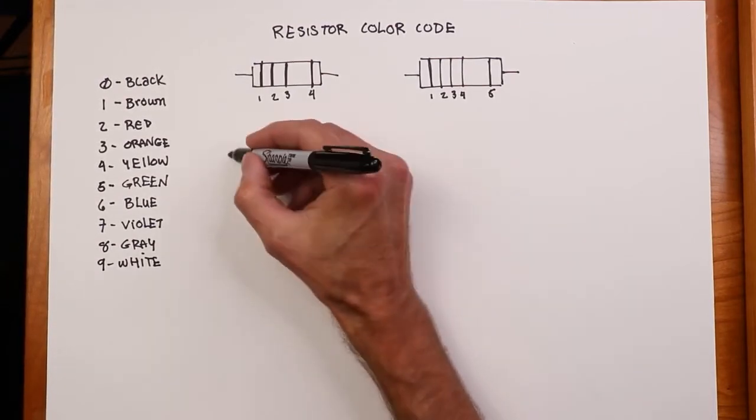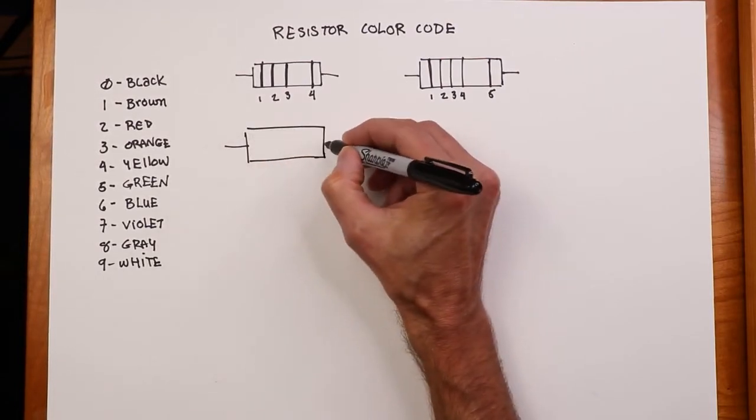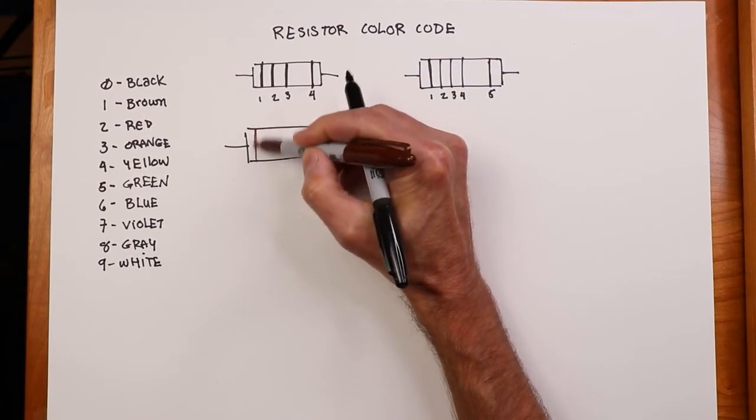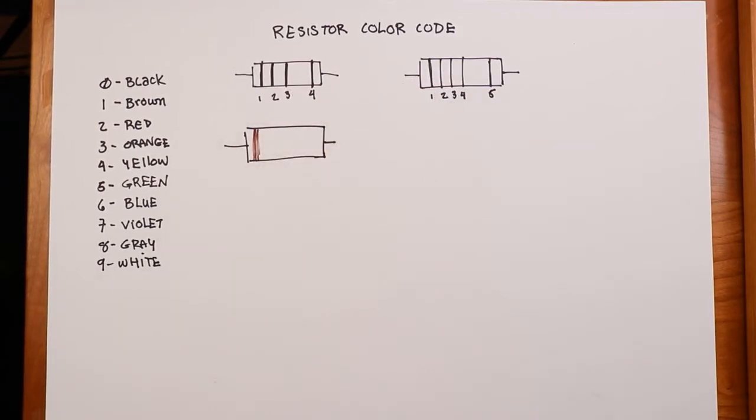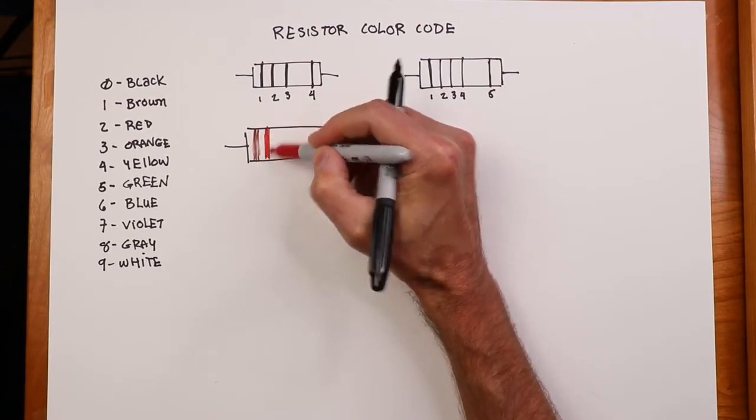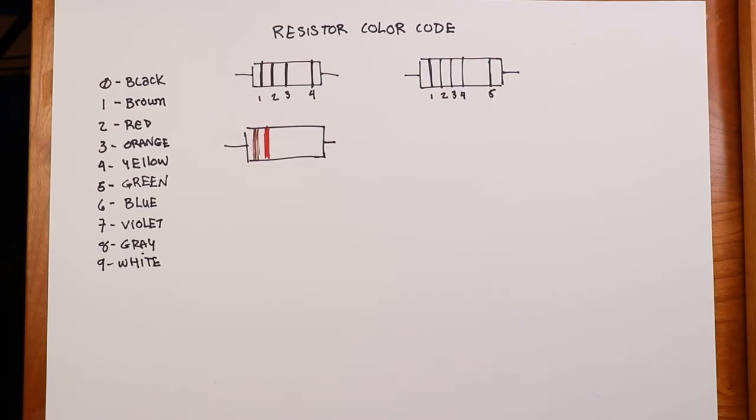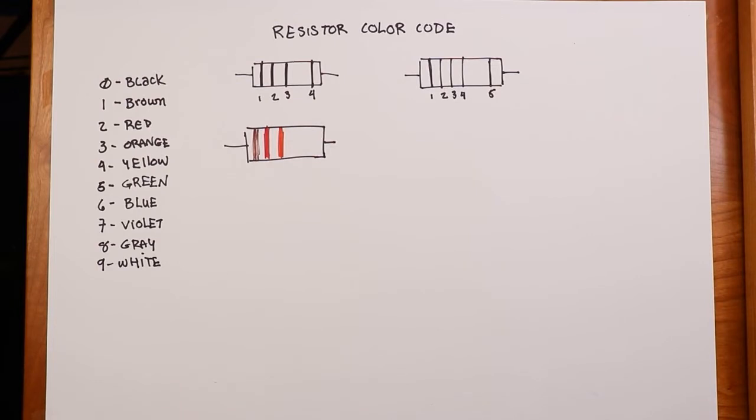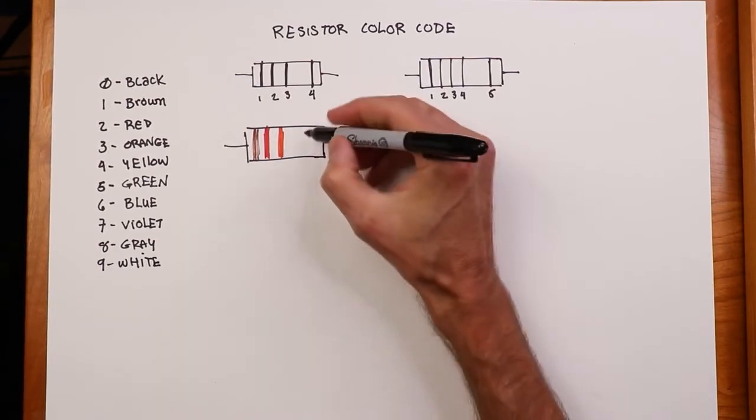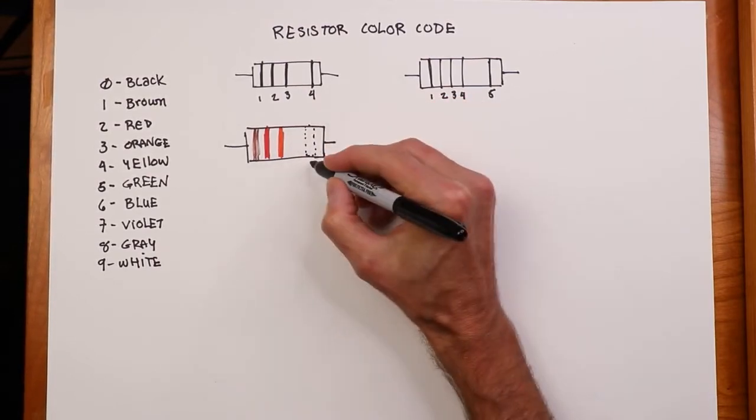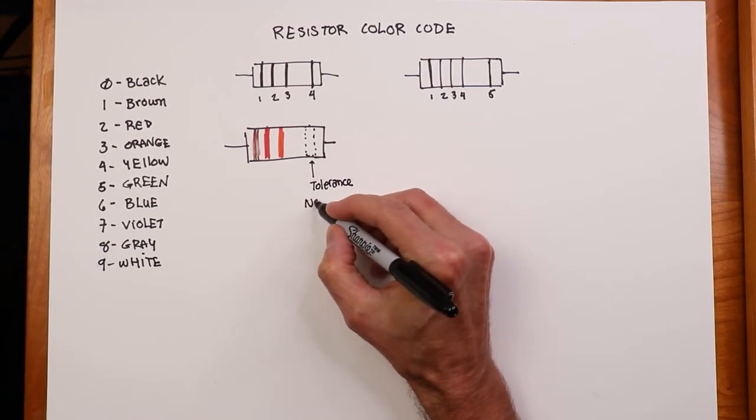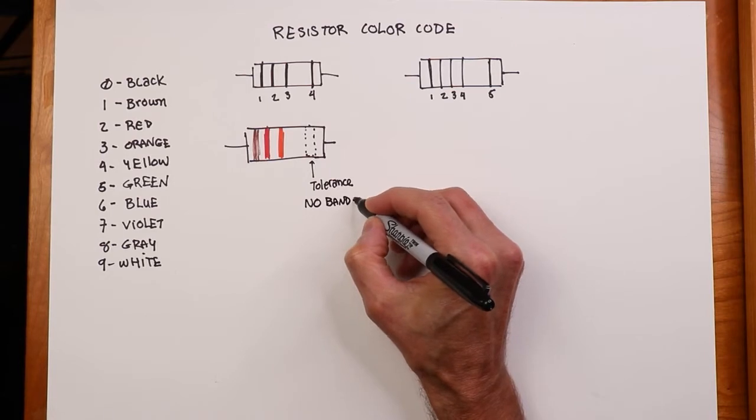So here's the way it works. We might have a resistor with the following colors. Oh, and look at this, we have color code. So let's say we've got a brown first band, and then a red next band, and we'll say we have orange. Looks a little on the red side, but close enough. And maybe I don't have a final band.